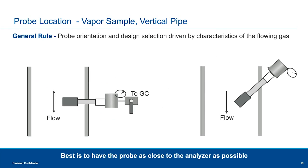If your pipe is vertical, you have two options: probe positioned horizontal or at a 45-degree angle. The probe tip type matters more in a vertical pipe — whether it's square or slanted. For a squared probe, it's only recommended for downward flow. For upward flow, you'd want a slanted or cut probe surface to help avoid contamination. Understanding your composition, flow rate, and flow direction becomes more critical with a vertical pipe.